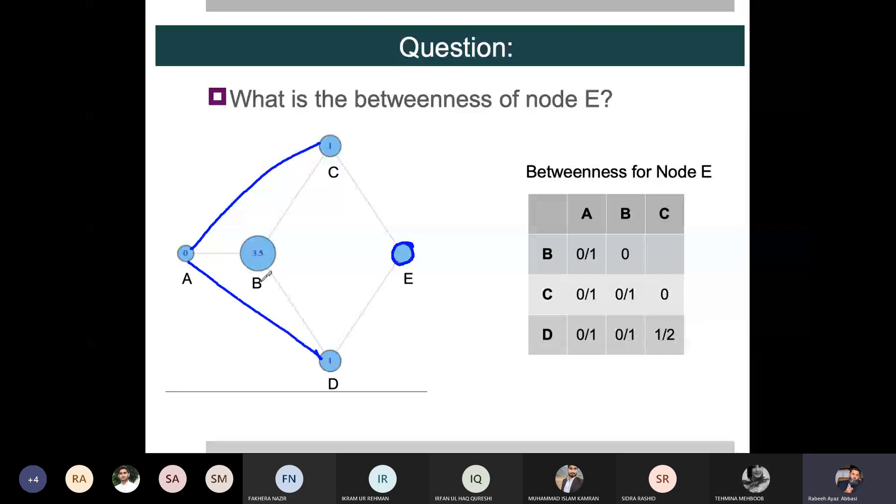What about this edge that now exists from A to D? So is betweenness zero or not? It will not happen, sir. Because when we go to A to D, then A is involved.